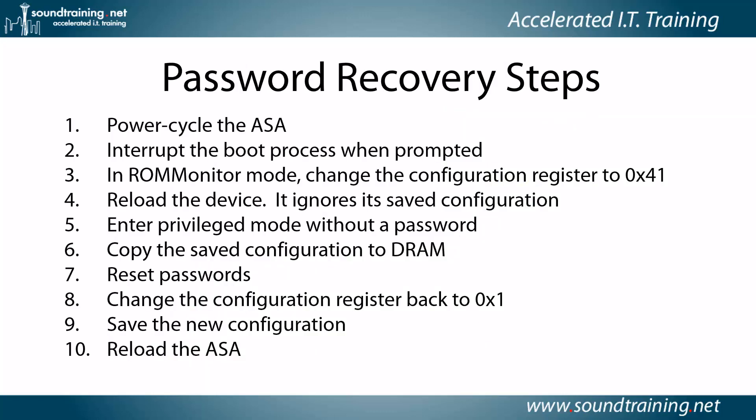Here are the 10 steps for password recovery. You're going to power cycle the ASA and interrupt the boot process when prompted, which takes you into ROM Monitor Mode. In ROM Monitor Mode, you'll change the configuration register to 0x41. The configuration register is a software value that tells the device how to boot, and changing it to 0x41 tells the device to ignore its saved configuration on boot. After changing the register, you'll reload the device, and it will boot ignoring its saved configuration, allowing you to enter privilege mode without a password.